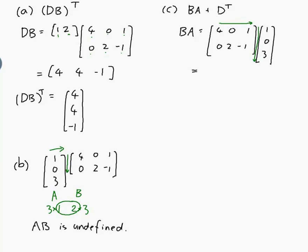Let's see, 4 times 1, which is 4, plus 0 times 0, which is 0, plus 1 times 3, which is 3. So I get 4 plus 3, which is 7. And then the next one, so I move down in my original matrix, so I move down in my answer as well. 0 times 1, which is 0, 2 times 0, which is 0, and minus 1 times 3, which is minus 3. So my answer to BA is this.